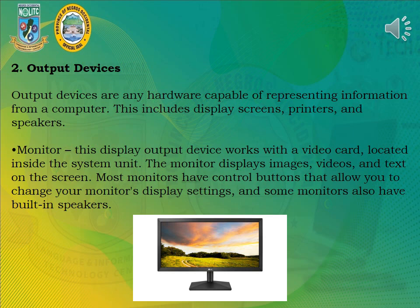Output Devices are any hardware capable of representing information from a computer. This includes display screens, printers, and speakers. Monitor — this display output device works with a video card located inside the system unit. The monitor displays images, videos, and text on the screen.